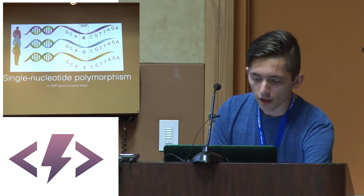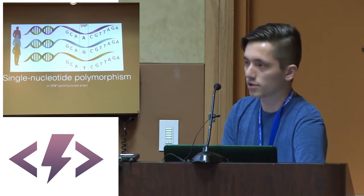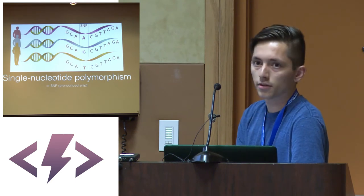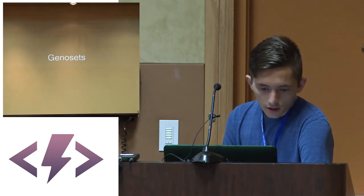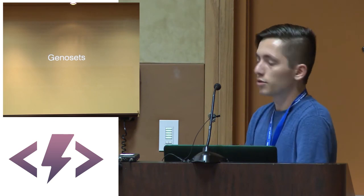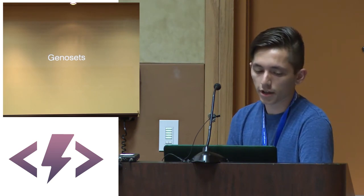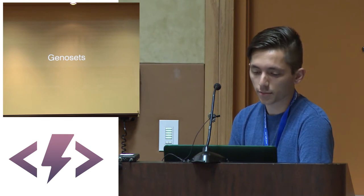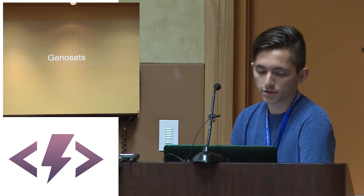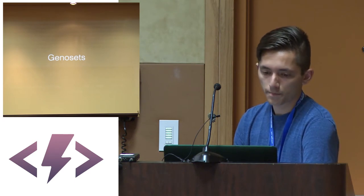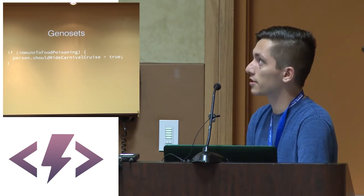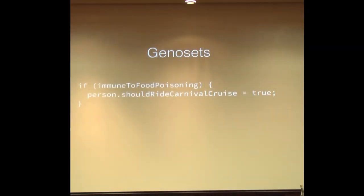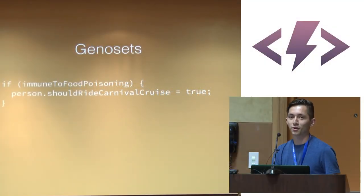Even easier for JavaScript people: just think of it like an object — key is the unique ID, value is the A's, G's, C's, T's. Now, one SNP isn't exactly a direct link to a physical mutation. There isn't just one key-value pair for blue eyes or green eyes. Multiple SNPs combined are what result in these characteristics. To describe this logic, the concept of a genoset came about. A genoset is essentially the if-condition for determining these characteristics. In this example, we want to know if a person is immune to food poisoning — which from a business standpoint is extremely vital for figuring out who goes on a carnival cruise.